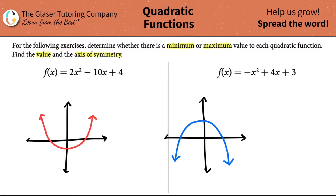They're either going to be smiling or they're going to be frowning. The turning point, which is called the vertex — how I drew it, the vertex would be right here. It's the turning point between going down and coming back up. It basically breaks the quadratic into two parts. The vertex splits the graph into two components, one that's decreasing on this side and one that's decreasing on this side.